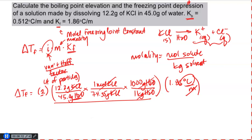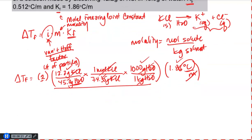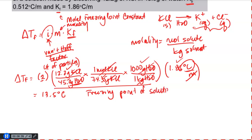If I take 2, multiply by 12.2, divide by 45, divide by 74.55, multiply by 1000, and multiply by 1.86, I come up with 13.5 degrees Celsius. Remembering that the freezing point of water is zero degrees Celsius, that means the freezing point of the solution would be negative 13.5 degrees Celsius.